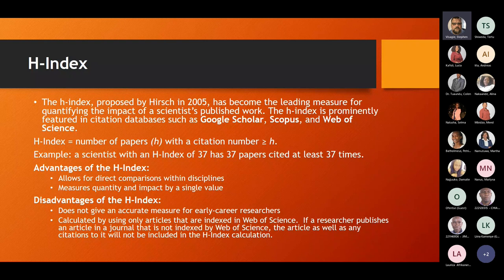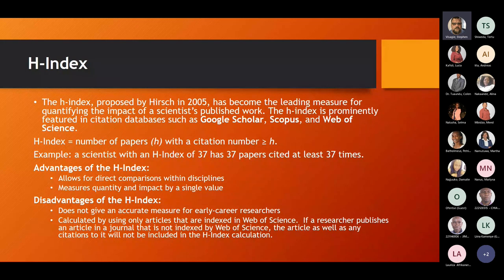It's possible that a researcher with 50 papers could have a higher h-index than one with 100 papers, due to being cited more frequently. The h-index allows for direct comparisons within disciplines. You'll notice that h-index scores are far higher in STEM and engineering than in the social sciences or humanities — more people cite important papers in technical fields. You must never compare across different disciplines; always compare within the same discipline.